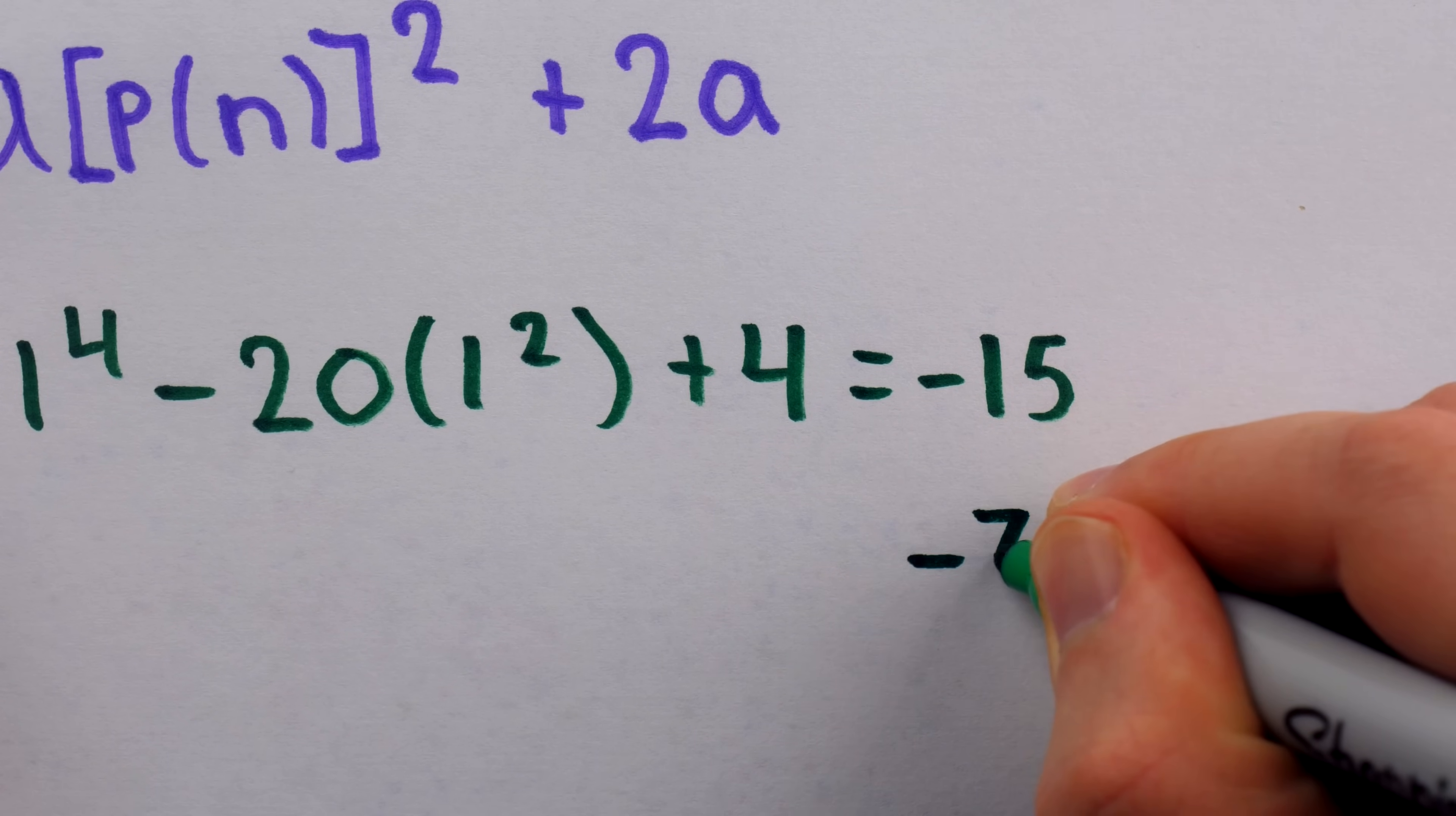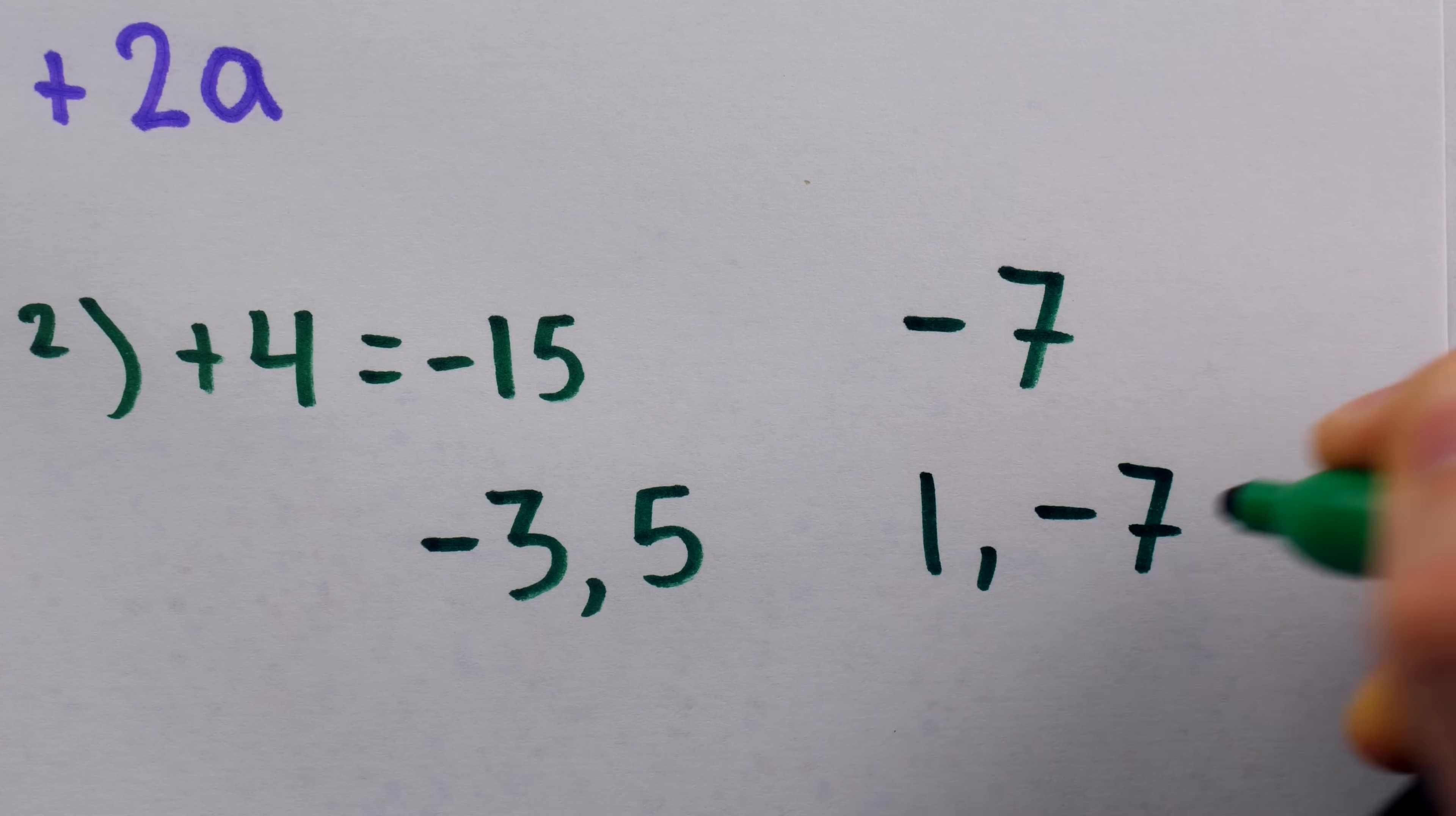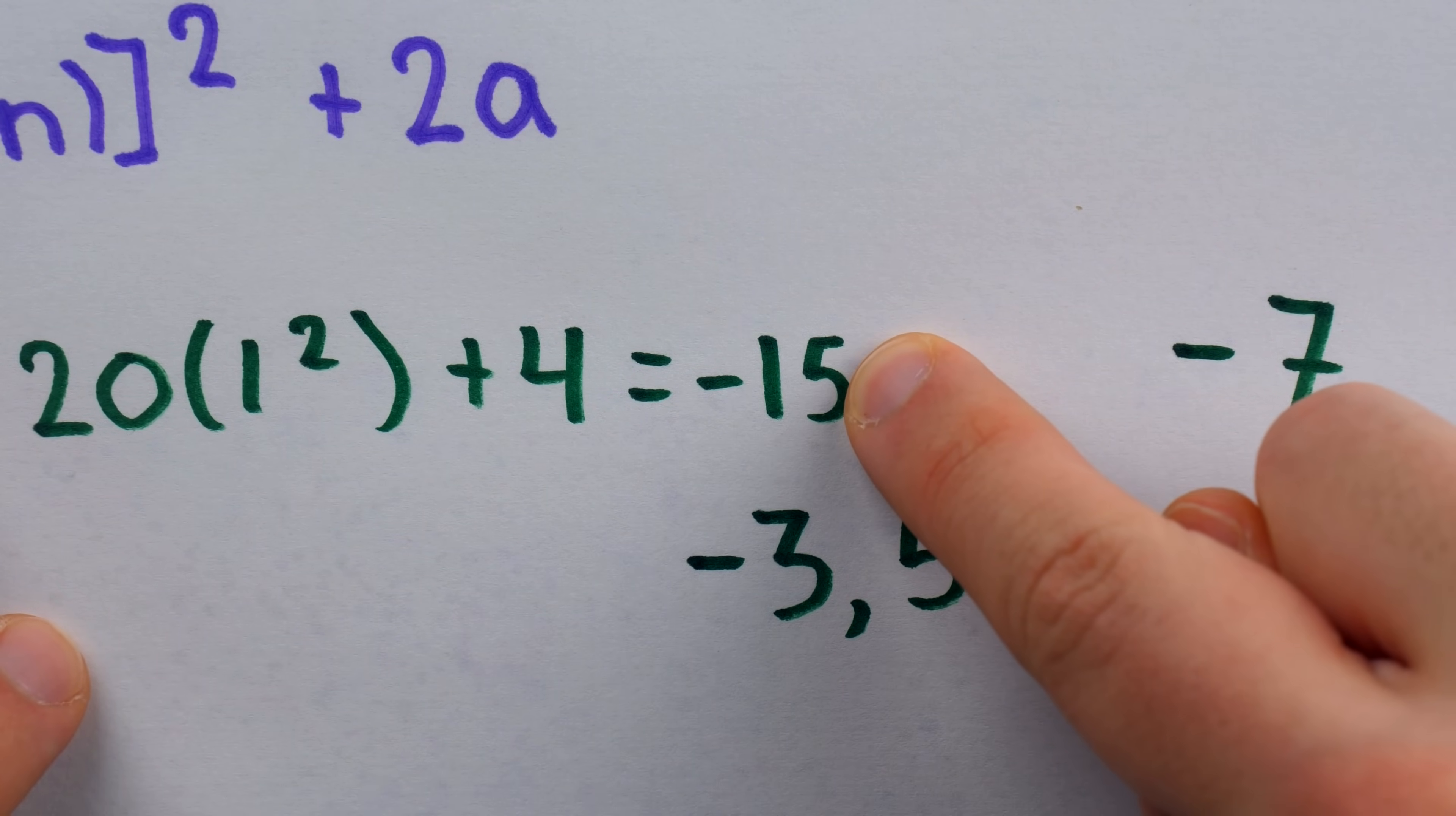For example, it's divisible by negative 3 and positive 5, so we would call this a composite integer, in contrast to an integer like negative 7, which is only divisible by 1 itself and the negatives of those numbers, negative 1 and positive 7. So this would not be composite because its only factors are 1 itself and the negatives, whereas this number is composite because it has factors other than 1 itself and the negatives.